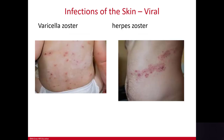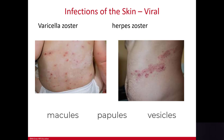Varicella zoster is the virus that causes chickenpox. Chickenpox results in macules, papules, or vesicles. Macules are flattened, discolored spots on the skin; papules are solid, elevated lesions on the skin; and vesicles are similar to papules but are filled with fluid. So: macules are flat discolored spots, papules are solid elevated lesions, and vesicles are fluid-filled lesions.